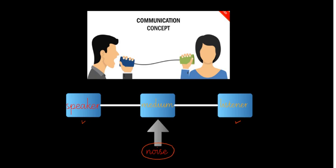A very basic setting for communication therefore consists of: a speaker, a listener, a medium or channel, and noise.